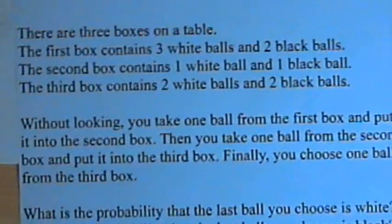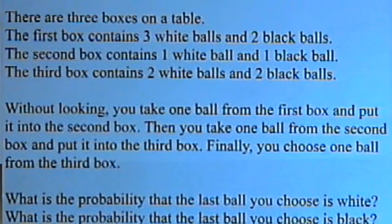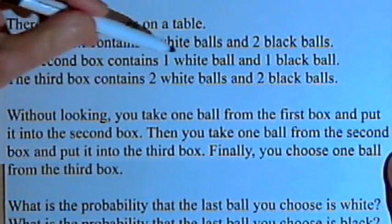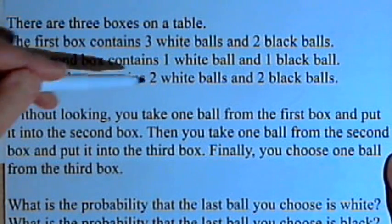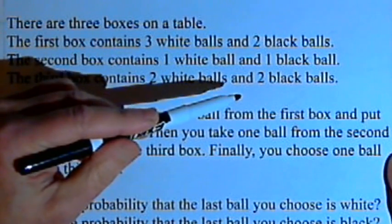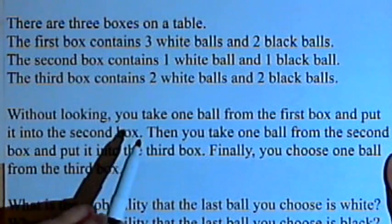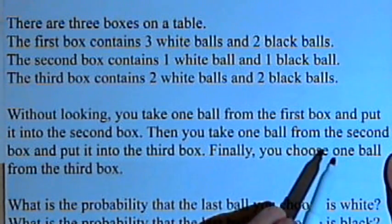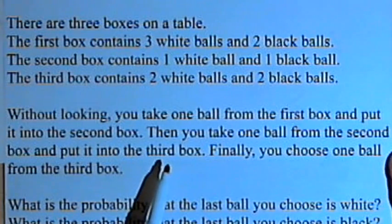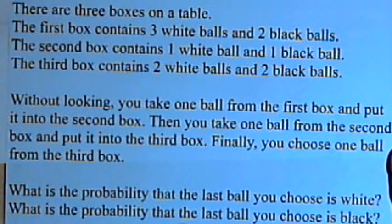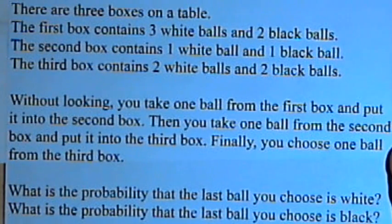Here's the problem. There are three boxes on the table. The first box contains three white balls and two black balls. The second box contains one white ball and one black ball, and the third box contains two white balls and two black balls. Without looking, you take one ball from the first box and put it into the second box. Then you take one ball from the second box and put it into the third box. And then finally you choose one ball from the third box. What's the probability that the last ball you choose is white? What's the probability that the last ball you choose is black?